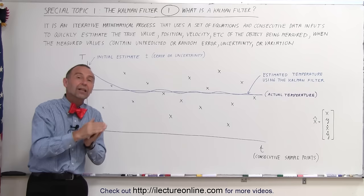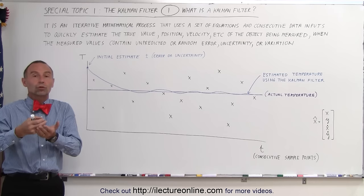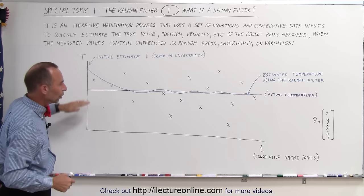So a very simple example here in the graphical sense can help you understand that. Let's say we're trying to measure the temperature with a certain thermometer. That thermometer is not very accurate. It has a certain amount of uncertainty in the data measurements. Let's say that the vertical axis here means temperature, the horizontal axis means time or consecutive sample inputs.